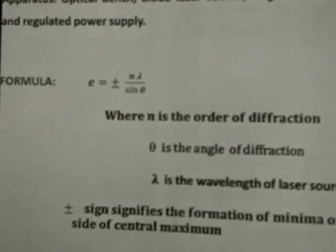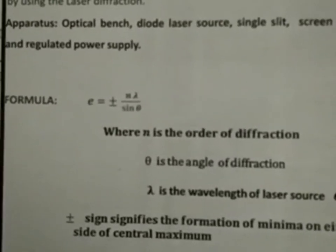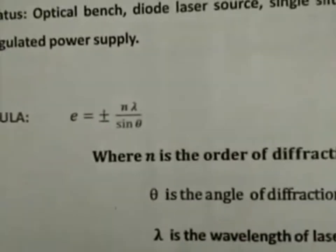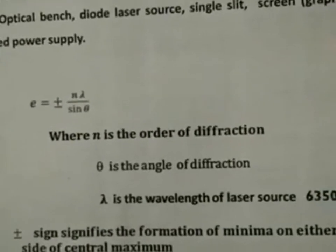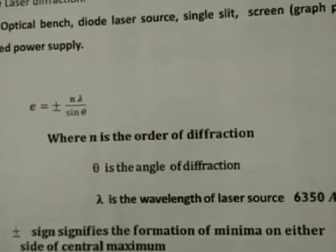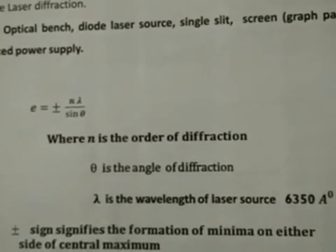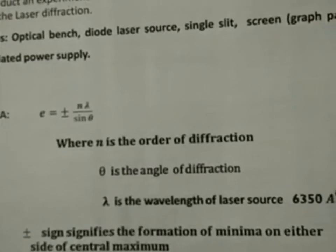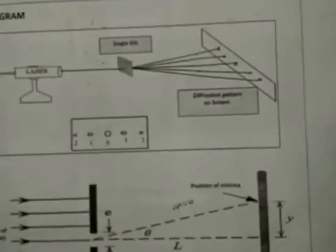The size of the micro-dimensional system, or the width of the single slit, is given by the expression: e = ±nλ/sinθ, where n is the order of diffraction minima, θ is the angle of diffraction, and λ is the wavelength of the laser source used, that is 6350 angstroms. The ± sign signifies that the diffraction minima are formed on either side of the central maximum.